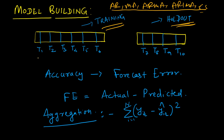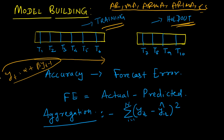For example, if there are 10 time periods, you take about 60-70% as training data and build an AR model. Then you estimate the values for T7, T8, T9, and T10 — which are in the holdout sample. You will have two values: the actual values from historical data and the predicted values. You compare them — if the difference is small, it is a good model. We measure the accuracy of the model to judge how good it is.